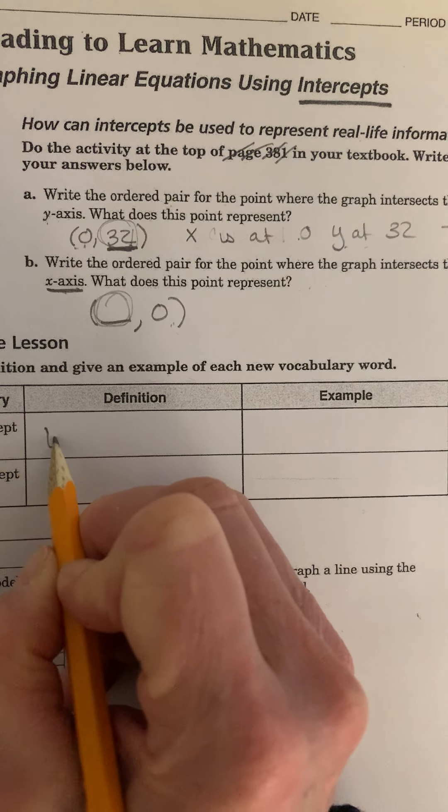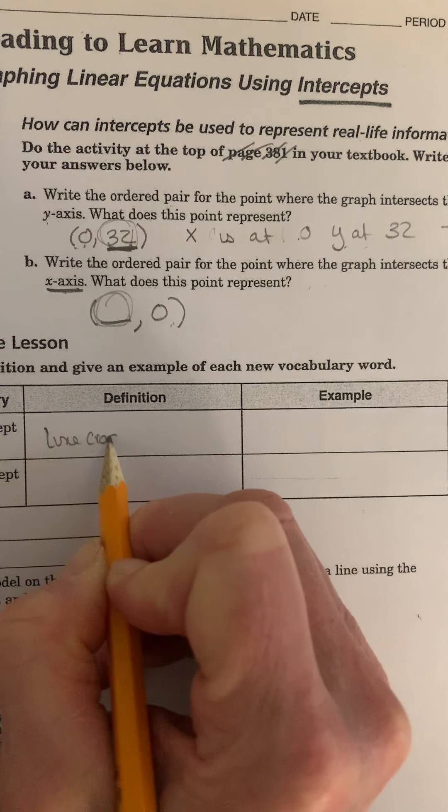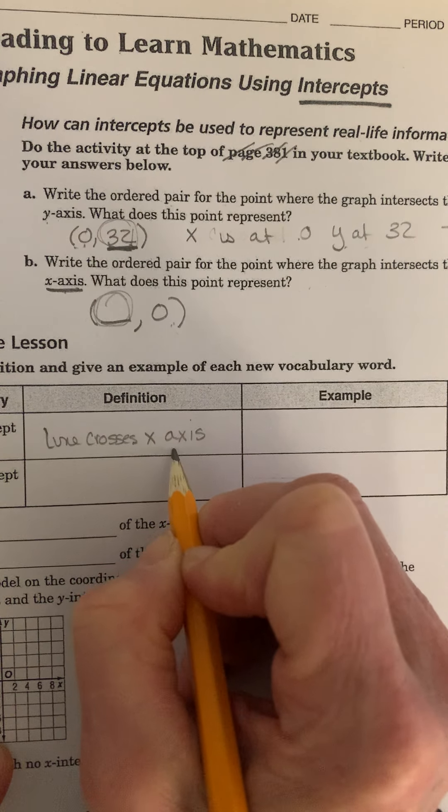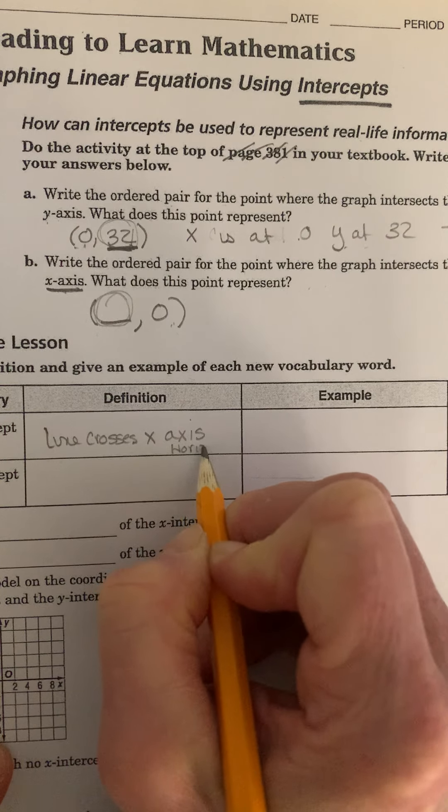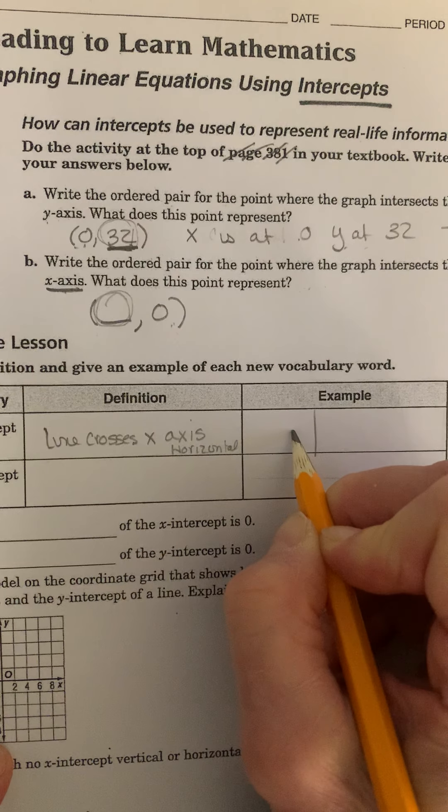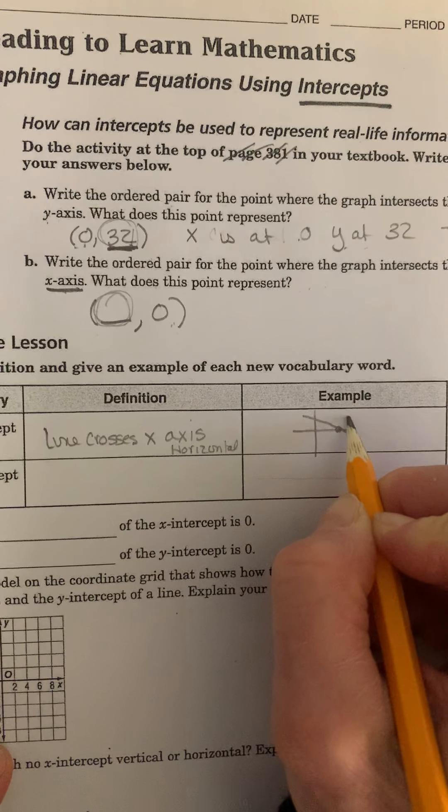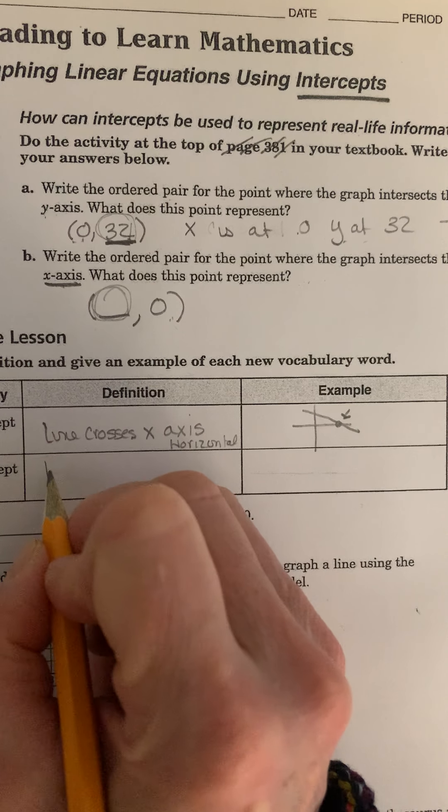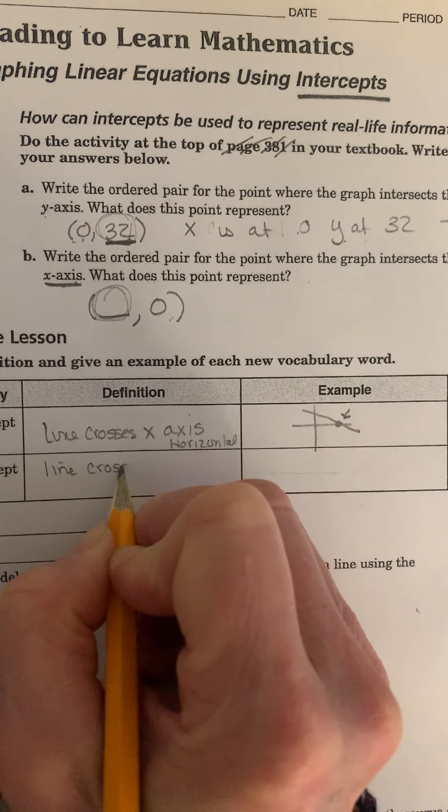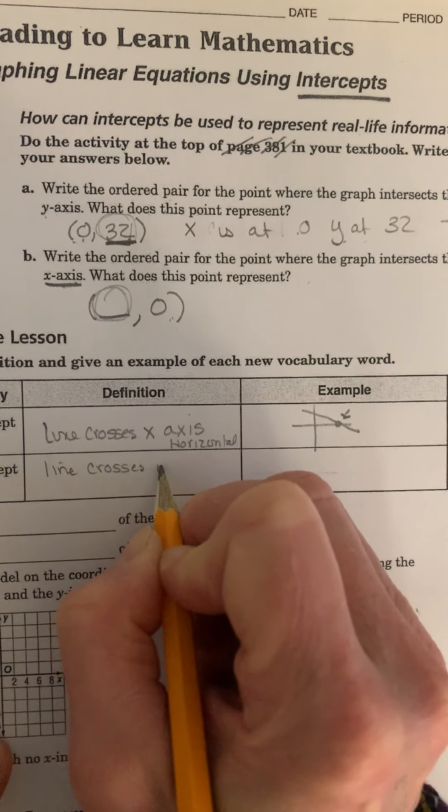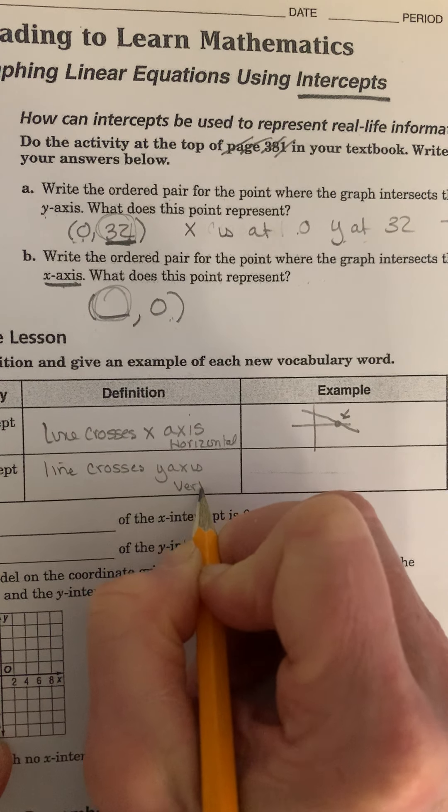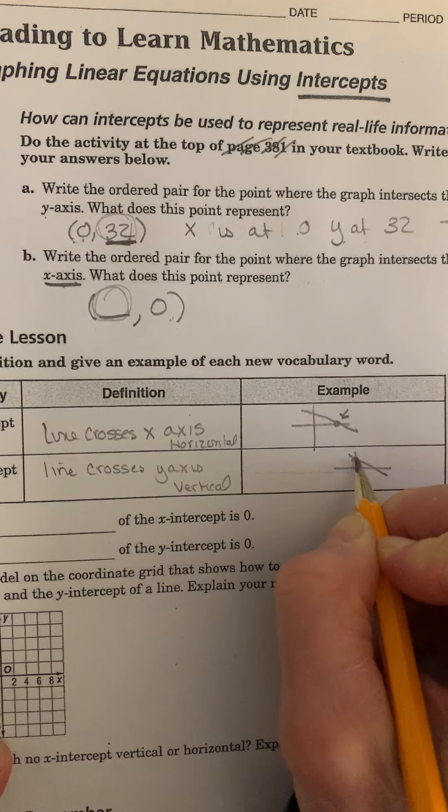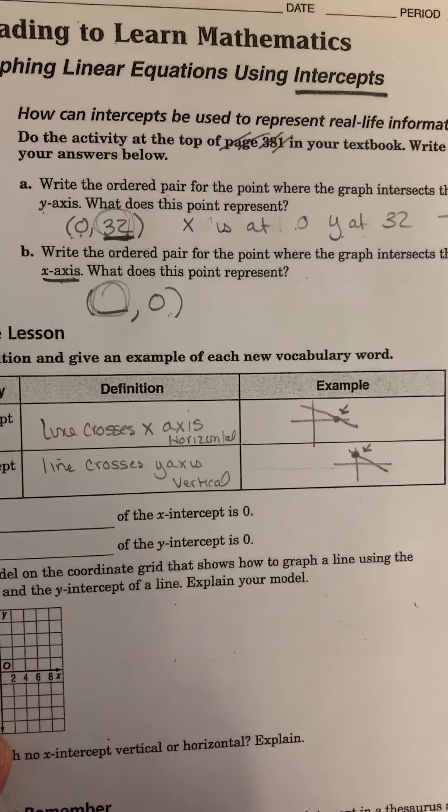X-intercept is when the line crosses the x-axis, which is the horizontal line. So like right there, that's the x-intercept. The y-intercept is when the line crosses the y-axis, which is the vertical line. So if this is my graph, that's the y-intercept right there.